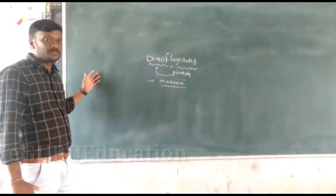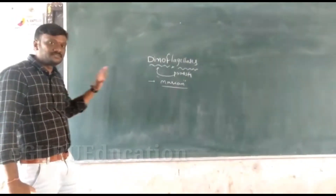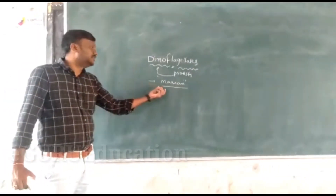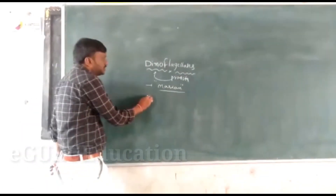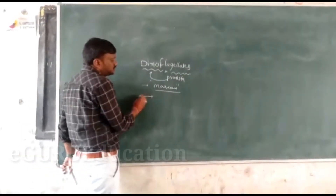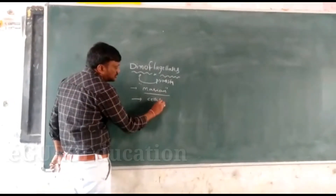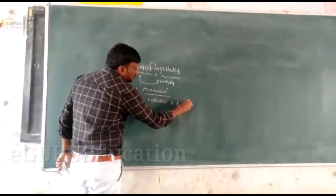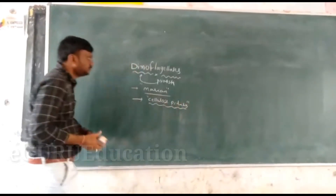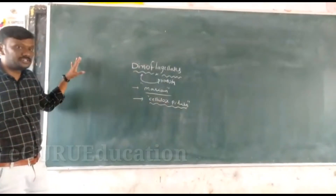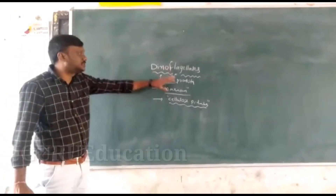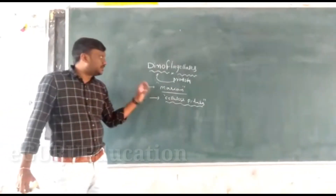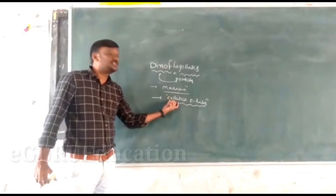Yesterday we were discussing chrysophytes. Chrysophytes are living in fresh water and at the same time marine water. But dinoflagellates are only living in marine places. At the same time, the dinoflagellates cell wall is made up of cellulose plates.